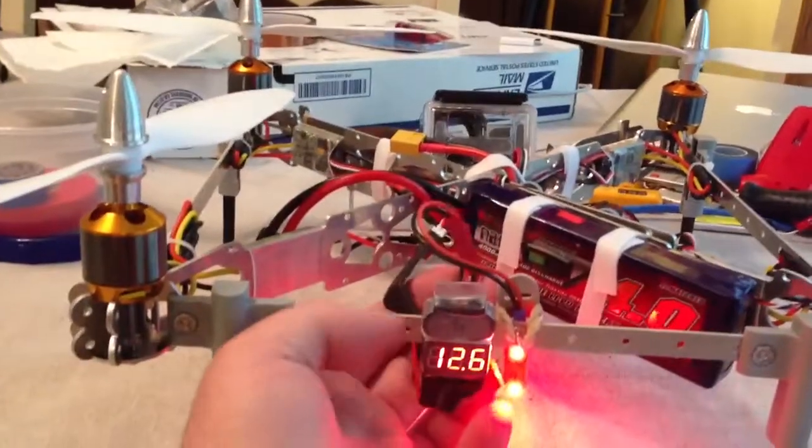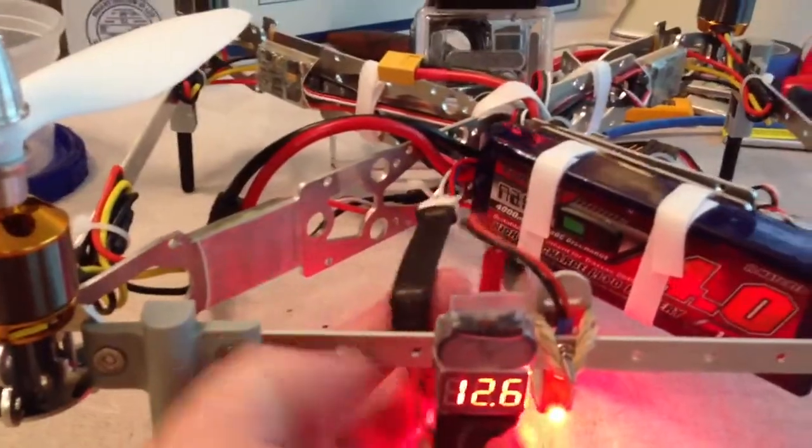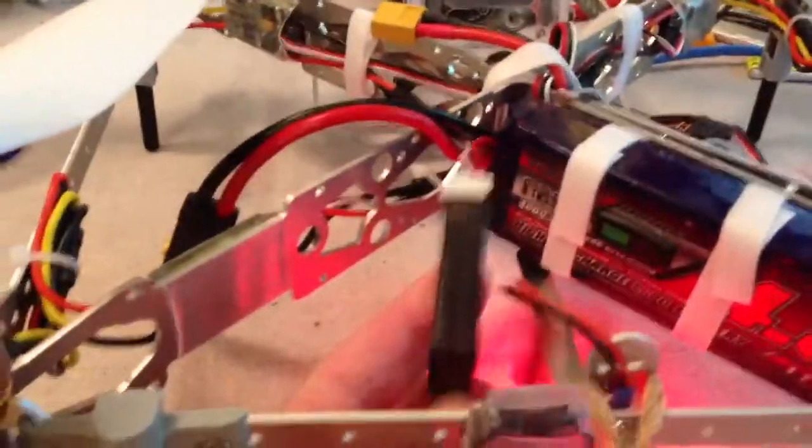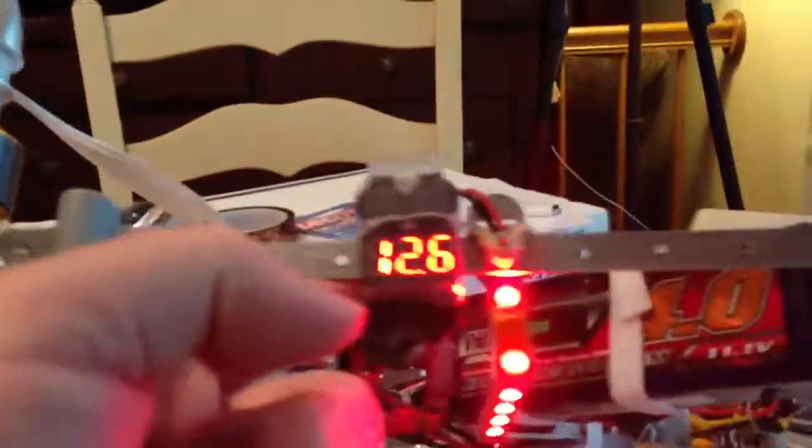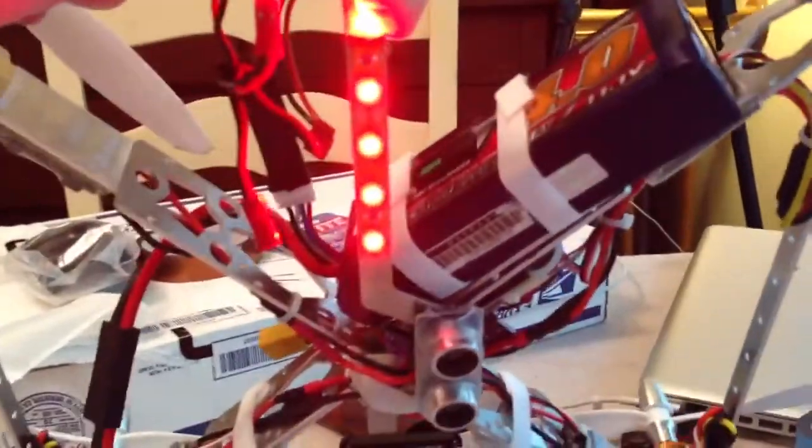Then, off that same harness, which is just the little JST connectors, I got this at Hobby King. I got some 12-volt LED strips, and I just tacked this one to the bottom of the camera mount.